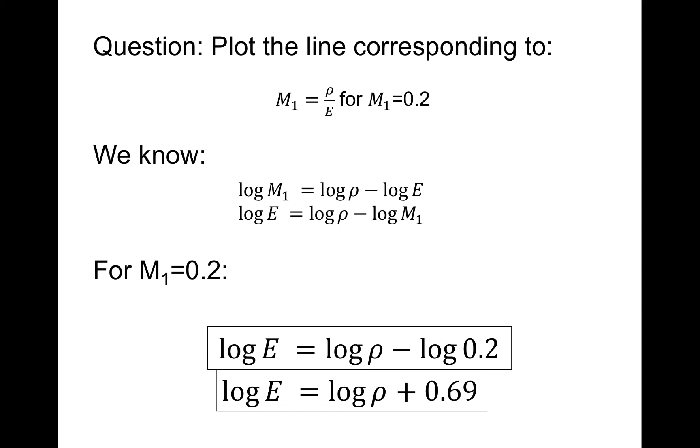Now we know from the rules of logs we can take the log of our equation and rearrange our terms, and we get the equation here that says the log of the elastic modulus is equal to the log of the density minus the log of M1. And now we're specifically trying to solve this for the problem where M1 equals 0.2. That's the line we can plot. And so we're going to do this two different ways.